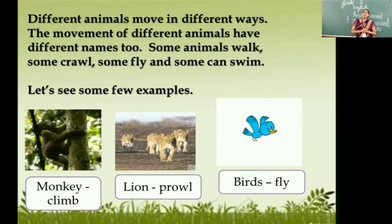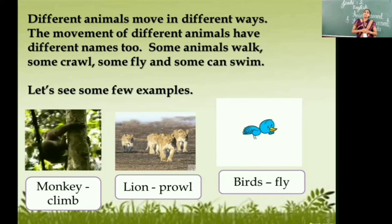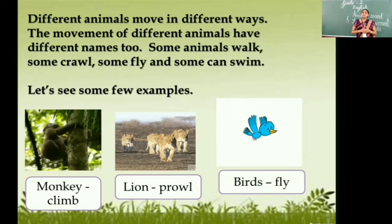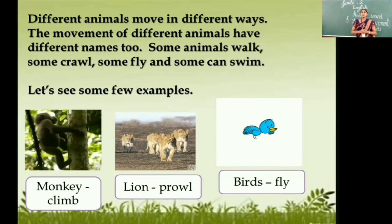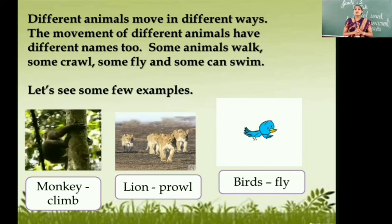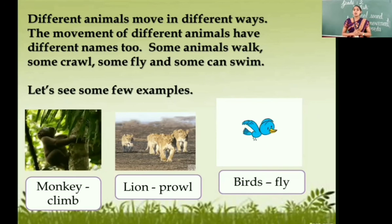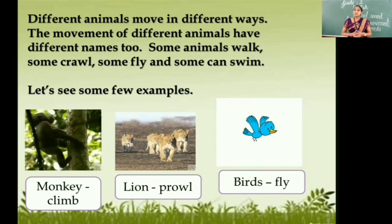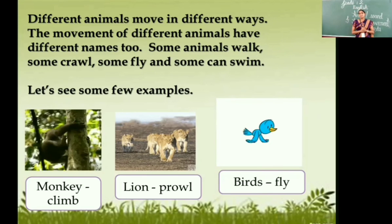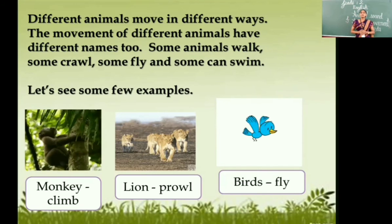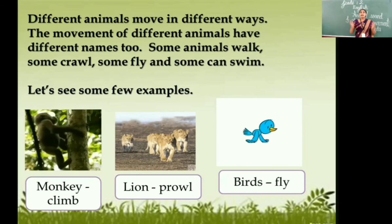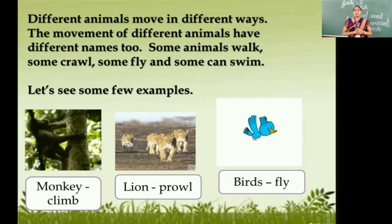Here you can see a monkey. What is the movement word for the monkey? Monkey has the movement word known as climb. The next picture is lion — what is the movement word of a lion? Prowl — P-R-O-W-L. The next picture is of birds — what is the movement word of a bird? Fly. Different animals and different birds have their different movements, and those movements have different names in English.